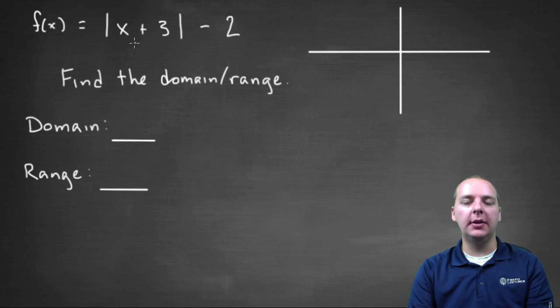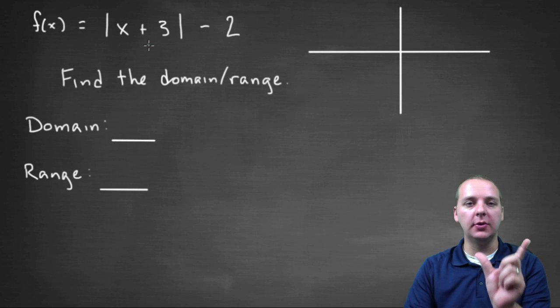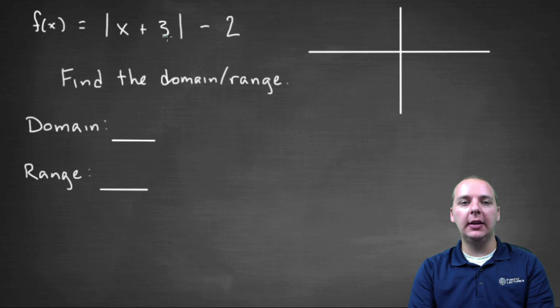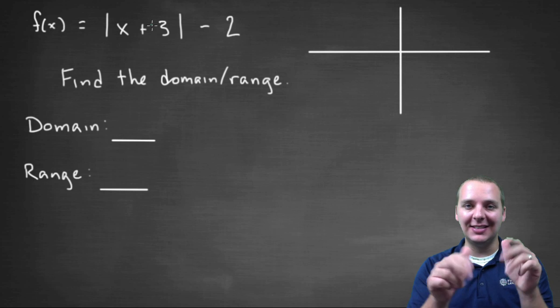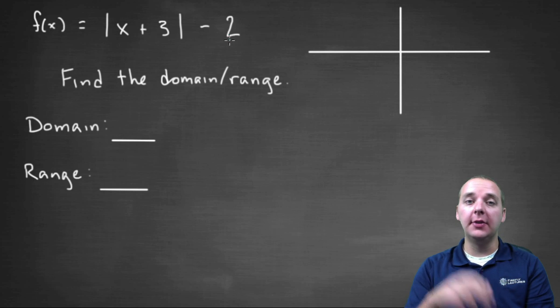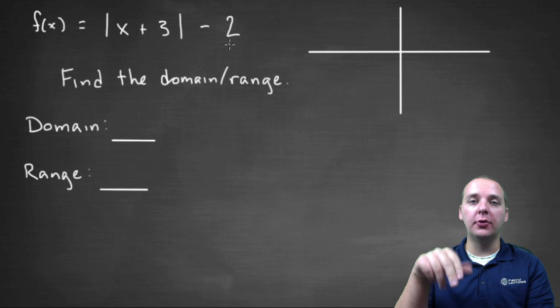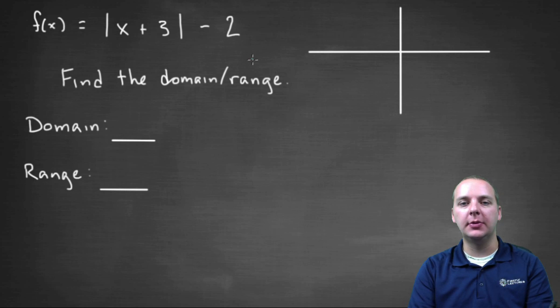What's going to happen is you're going to have the parent function, the normal absolute value of X graph, the V-shaped graph, and it's going to be translated left three units and down two units. This is a horizontal translation since it's inside the absolute value. This is a vertical translation or a vertical shift because it's outside the absolute value.